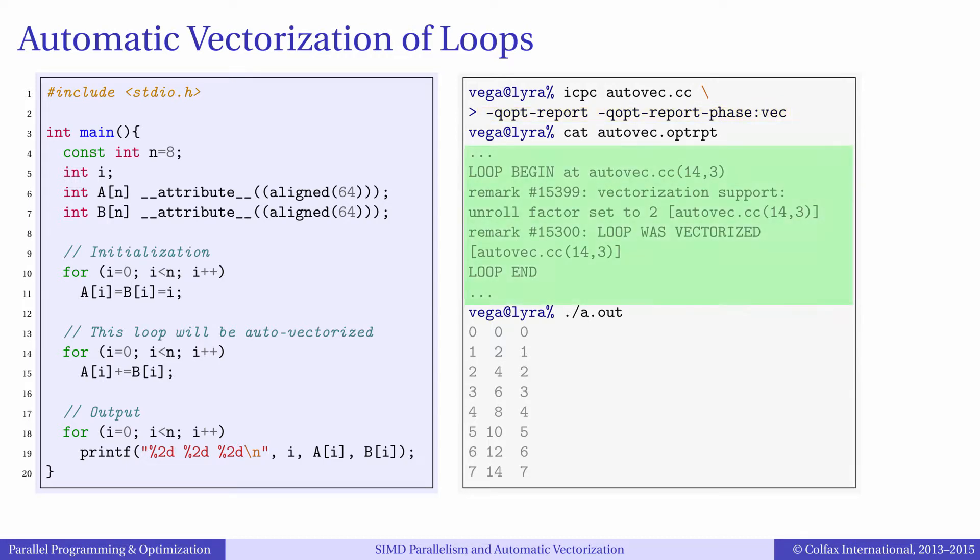Those arguments tell the compiler to generate a vectorization report and put this report in a file. The file name is by default the same as the source file name, and the extension is .optrpt.